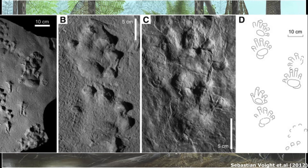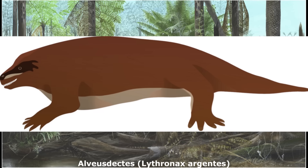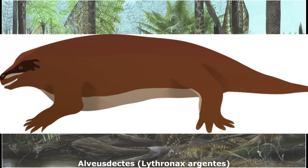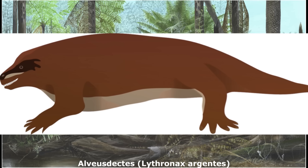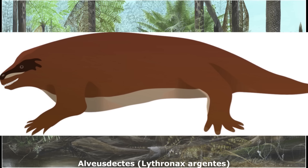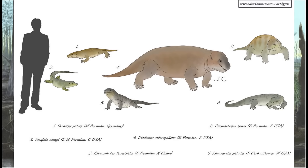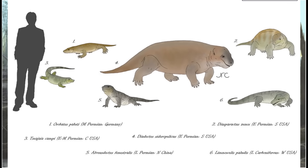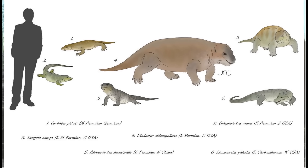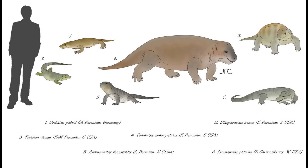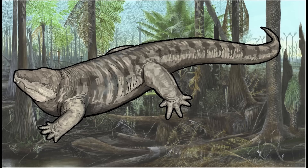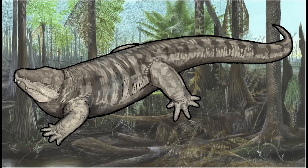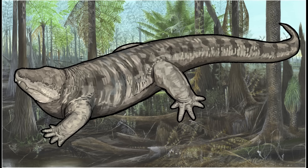Diadectes was one of the youngest diadectomorphs, although it wasn't the last, with that honour at the moment going to the Chinese genus Alveustectes, which is about 16 million years younger than all other forms. It lived during the late Permian, roughly 256 million years ago, and is the only diadectomorph known from Asia. Compared to Diadectes, it was quite small at just over one metre long, with the animal's survival possibly being related to the somewhat isolated nature of northern China during the late Permian, therefore not having to compete with the now common herbivorous synapsids and pareiasaurs. This may also explain the eventual extinction of the diadectids, with the Permian seeing many other big herbivorous land animals emerge, and the diadectids perhaps struggling to compete with them in the long run.